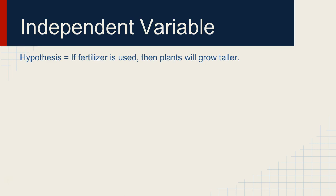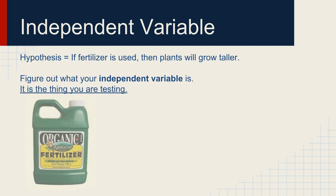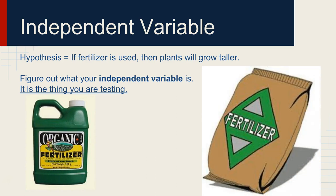The first one being the independent variable. And if we use this hypothesis, if fertilizer is used, then plants will grow taller. What is our independent variable in that example? It's the thing that we need to test. Fertilizer. That is the thing that we're testing. That's our independent variable.